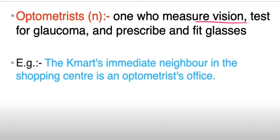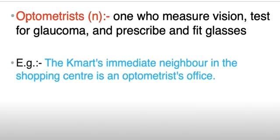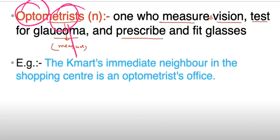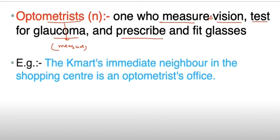Optometrist means one who measures vision — they test for glaucoma and prescribe glasses. Opto means light and metry means measure, so an optometrist is any vision checker. The optometrist's office was the neighbor in the shopping center. If you check eyes, you suggest glasses.